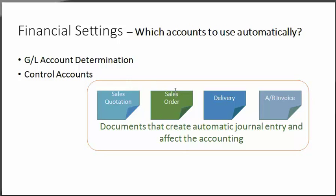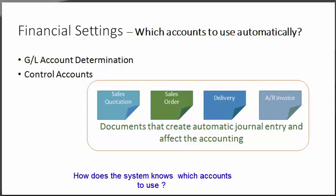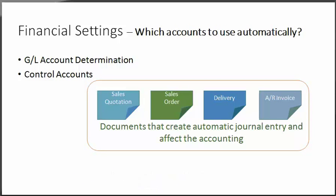The sales quotation is copied to sales order, then delivery, and then AR invoice. These are the documents that create automatic general entries and affect the accounting in SAP Business One. The system knows which accounts to use because when you initialize SAP Business One, you define default general ledger accounts related to specific business processes in the GL account determination window. In this window you also define control accounts that link the business partner sub-ledger accounts to the general ledger.